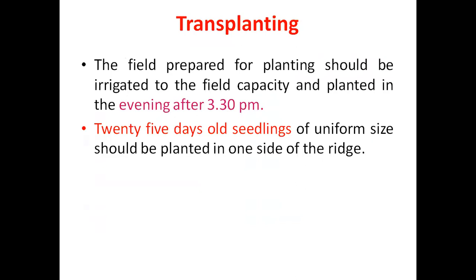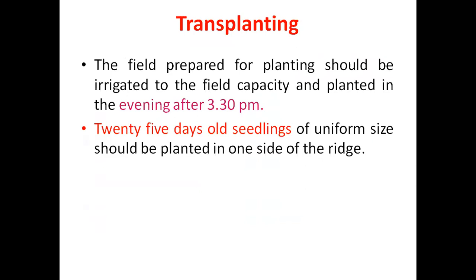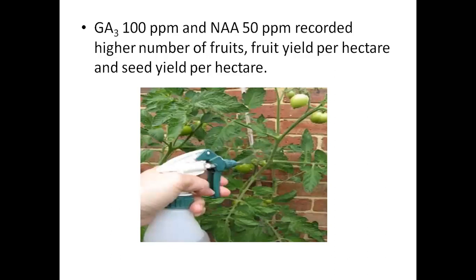GA3 at 300 ppm and NAA at 50 ppm recorded higher number of fruits and fruit yield per hectare. Under stress conditions, if you want to increase flowering or reduce flower drop, you generally use NAA, which is also called Planofix. GA3 gibberellic acid 100 ppm with NAA 50 ppm is another treatment.